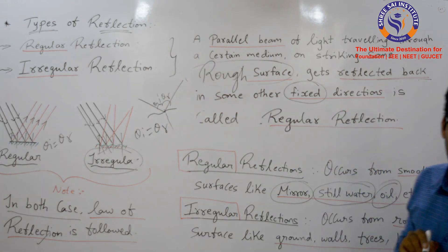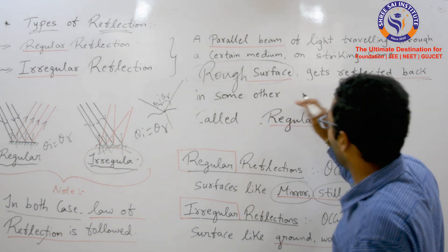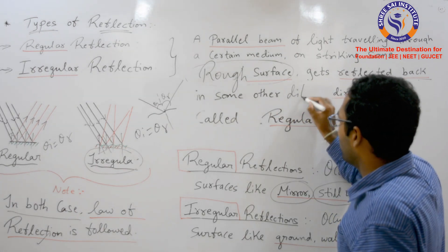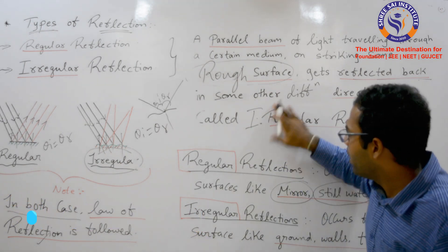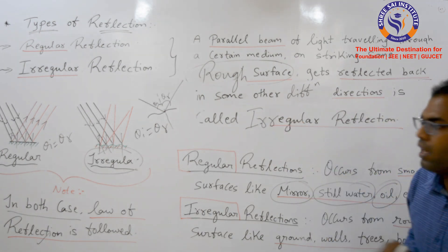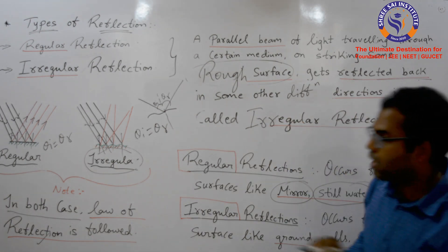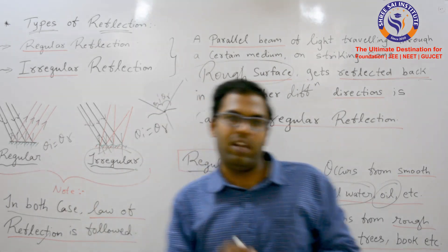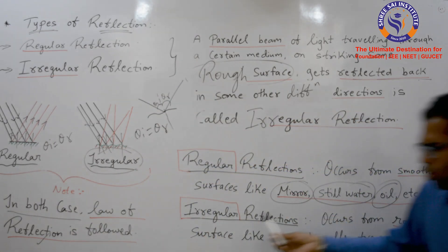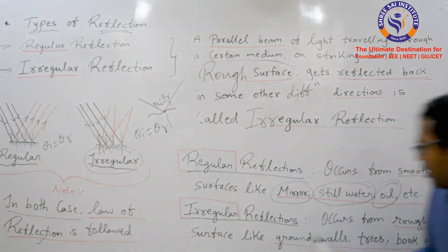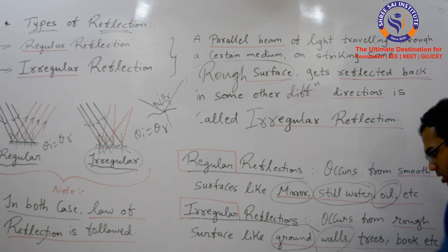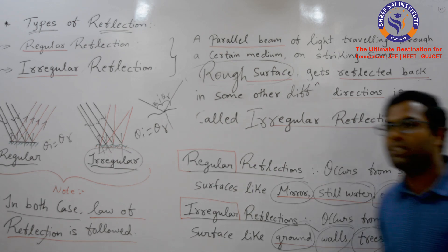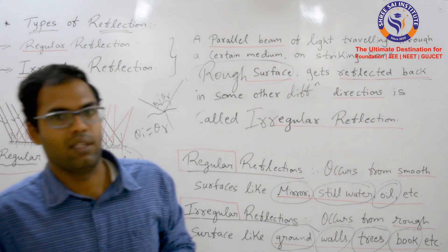This is the definition of irregular reflection. The second name for it is diffused reflection. Irregular or diffused reflection occurs on surfaces such as the ground, walls, blocks, trees, and books.